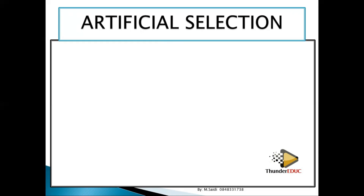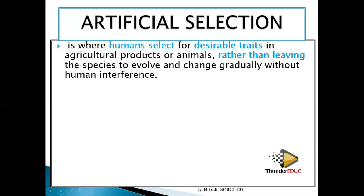It depends on the desire of the human being. Artificial selection is where humans select for desirable characteristics or traits in agricultural products and animals, rather than leaving the species to evolve naturally or gradually without human interference.